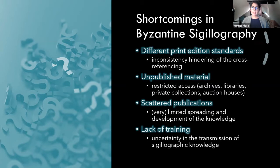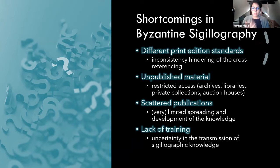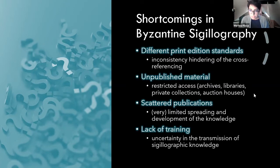Unpublished material is kept by monastic archives, by libraries, by private collections, and last but not least by auction houses, because there is actually a flourishing market of Byzantine lead seals. Then we have scattered publications. Apart from the big corpora, we have small articles here and there in various journals and collected volumes, with very limited spreading and development of knowledge.